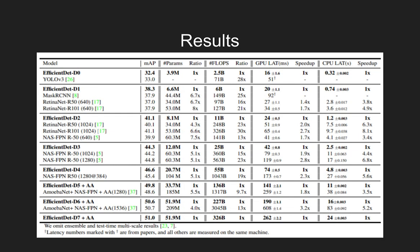Using the compound scaling method, a family of EfficientDet networks are generated, that is EfficientDet D0 to D7. The table shows a single scale performance of the models on the COCO dataset. The EfficientDet models achieve better accuracy and efficiency than previous detectors across a wide range of accuracy and resource constraints. Note that EfficientDet D0 achieves similar accuracy as YOLOv3 with 28 times fewer flops.